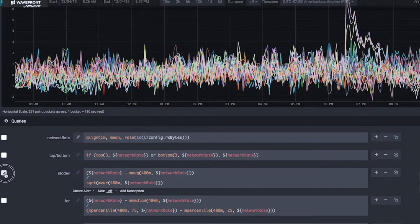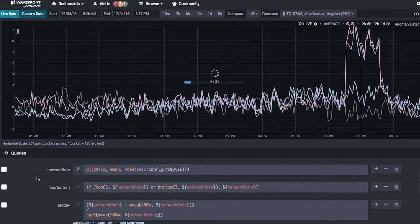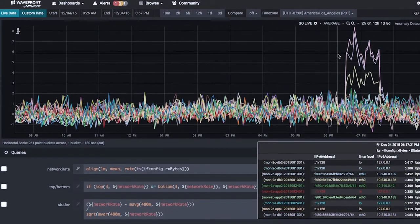An even better way to look at this anomaly is something called IQR. Again, inside Wavefront, you can put together any combination you want to. Here's the combination for IQR. If I use that, you can see the beginning and the end of the anomalies.